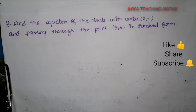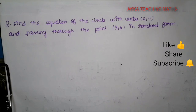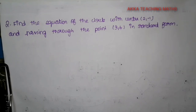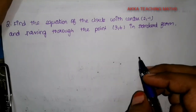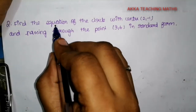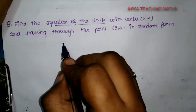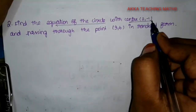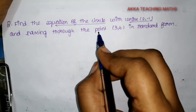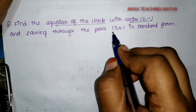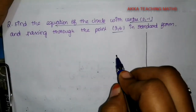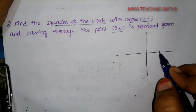Hi friends, welcome to Aka Teaching Max. Again, the question is to find the equation of the circle with center (2, -1) and passing through the point (3, 6) in standard form. So equation of circle: the center is (2, -1) and the passing point is (3, 6).